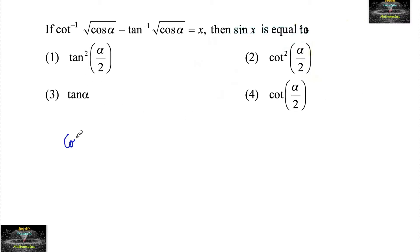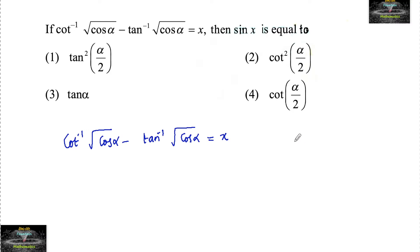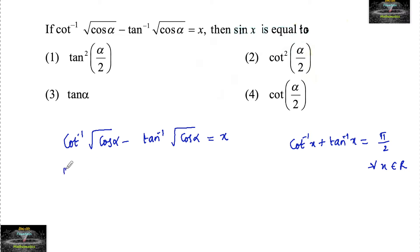If cot⁻¹(√cos α) minus tan⁻¹(√cos α) is equal to x, then sin x is equal to? Since we know that cot⁻¹(x) plus tan⁻¹(x) is equal to π/2 for all x belonging to ℝ, we can write cot⁻¹(√cos α) as π/2 minus tan⁻¹(√cos α).